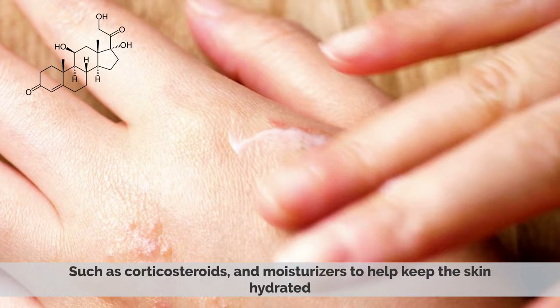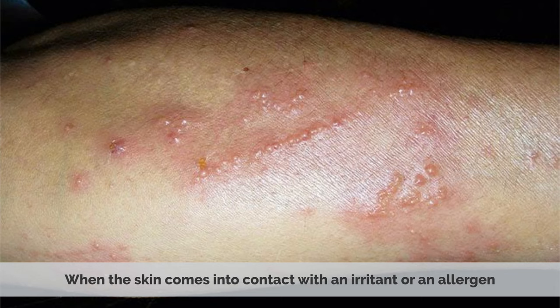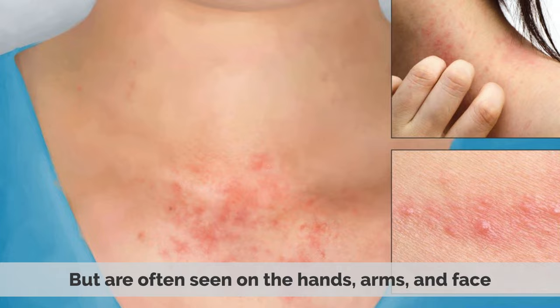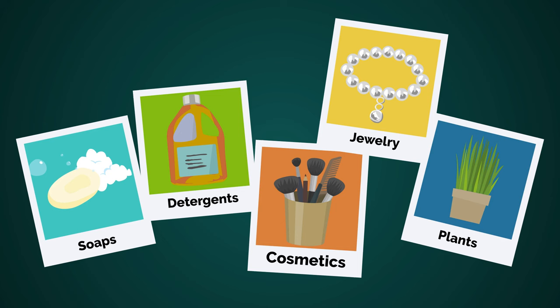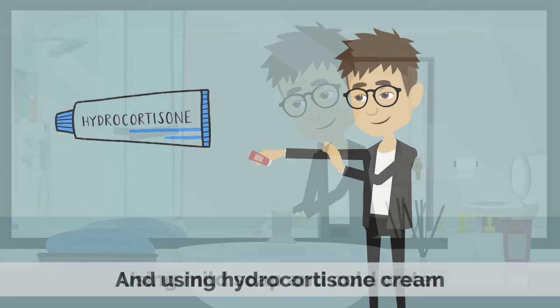2. Contact Dermatitis. Contact dermatitis is a type of eczema that occurs when the skin comes into contact with an irritant or allergen. It is characterized by red, itchy, dry patches that can form anywhere on the body, but are often seen on the hands, arms, and face. Common irritants that can trigger contact dermatitis include soaps, detergents, cosmetics, jewelry, and plants. Treatment usually involves avoiding contact with the irritants, using mild soap and cold water, and using hydrocortisone cream.